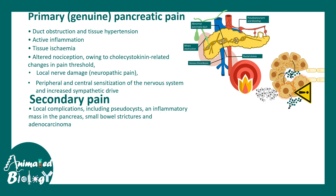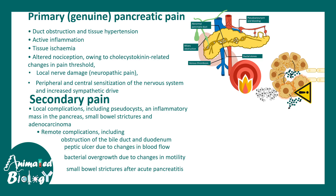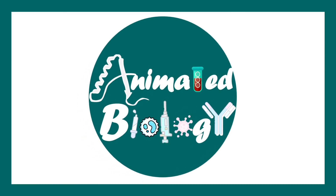Secondary pain is associated with local or systemic complications. The most common complications include obstruction of the bile duct, peptic ulcer due to lack of blood flow, bacterial overgrowth due to changes in gastric motility, and small bowel strictures that occur after acute pancreatitis. All these factors can lead to severe pain in chronic pancreatitis.